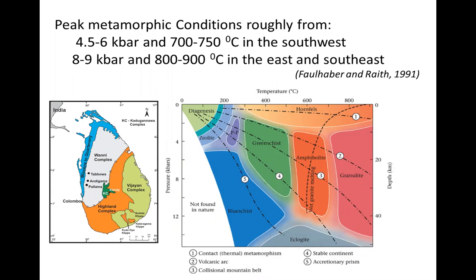Muscovite disappears when entering the amphibolite facies because at higher temperatures muscovite breaks down — it dehydrates and forms other minerals. For example, garnet can be produced as a result of muscovite breakdown. Garnet may not be present at very low-grade conditions, but at higher temperatures garnet and orthopyroxene appear. These are anhydrous minerals — they do not contain water, hydroxyl groups, or H₂O in their structure.